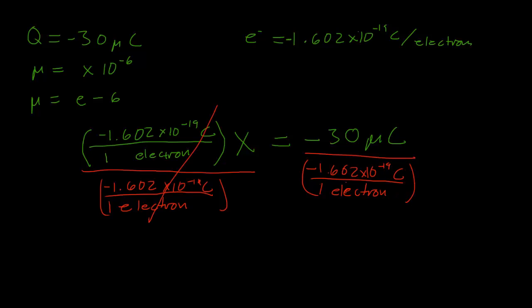So on the left side here, these will just cancel. We'll be left with x equals negative 30 microcoulombs. And remember that when we divide by a fraction, we multiply by its reciprocal. So I'm just going to flip this over, 1 electron over 1.602 times 10 to the negative 19th coulombs. And when we multiply here, the coulombs will cancel and we'll be left with electrons. And this will tell us the number of electrons we need.